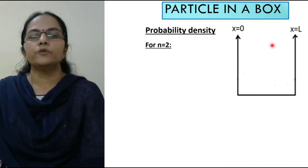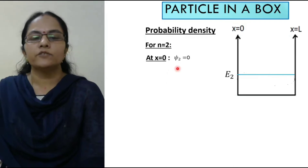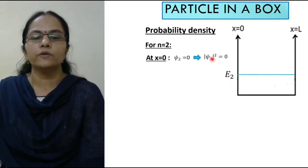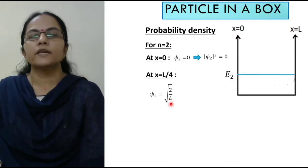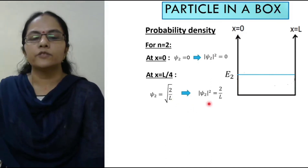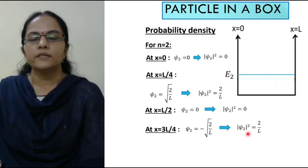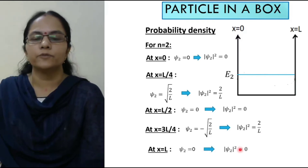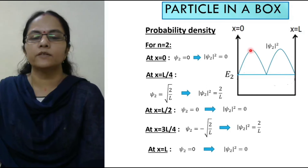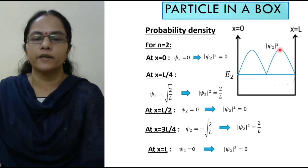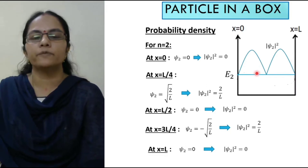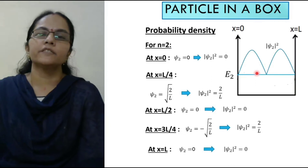For n equals 2 at energy E2: at x equals 0, ψ2 is 0, so |ψ2|² equals 0. At x equals L/4, ψ2 equals square root of 2 by L, so |ψ2|² equals 2 by L. At x equals L/2, ψ2 equals 0, so |ψ2|² equals 0. At x equals 3L/4, the probability density is again 2 by L. At x equals L it is 0. The maximum probability density is 2 by L at both L/4 and 3L/4.